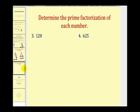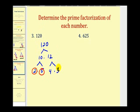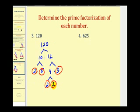Let's go ahead and try two more. Here we have one hundred twenty. Since it ends in a zero, we know it's divisible by ten, so it would be ten times twelve. Neither of those are prime. Ten would be two times five, which are both prime, so we'll circle those. Twelve can be written as four times three, where three is prime, and then four can be written as two times two. So the prime factorization of one hundred twenty would be three factors of two, one factor of three, and one factor of five — or using exponents, two to the third times three times five.